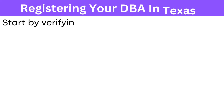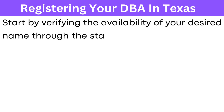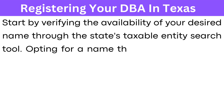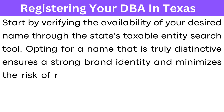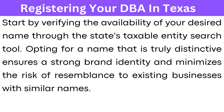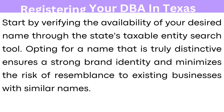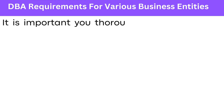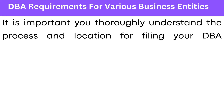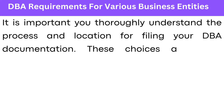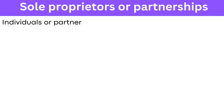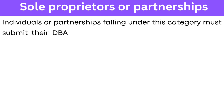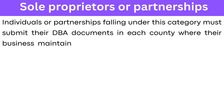Start by verifying the availability of your desired name through the State Taxable Entity search tool. Opting for a name that is truly distinctive ensures a strong brand identity and minimizes the risk of resemblance to existing businesses with similar names. It is important you thoroughly understand the process and location for filing your DBA documentation, as these choices are often contingent upon the type of business entity you have. Individuals or partnerships must submit their DBA documents in each county where the business maintains an office.